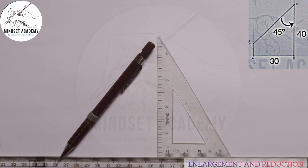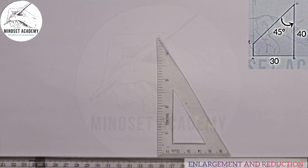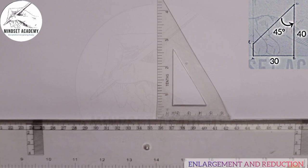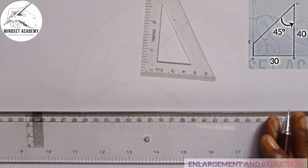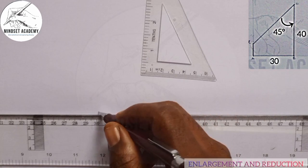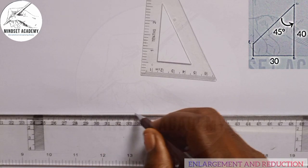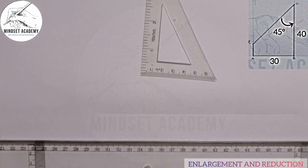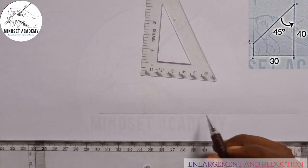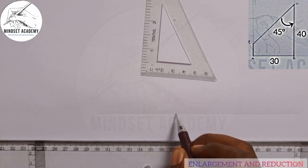The first thing we have to do is to replicate the figure displayed at the right-hand side of the screen. We'll draw a horizontal line this way, then pick a point on that line.